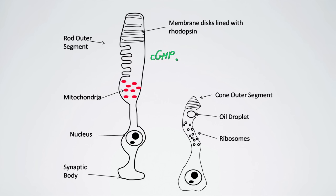We're not going to go beyond this point in this video, but I hope you have a better understanding of what happens in the rods. We're not going to go into what happens in the cones because it's a similar process — yes, there are some differences, but this gives you a general idea. That's it for this video, and I'll see you in the next one.